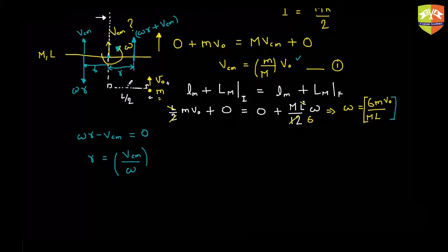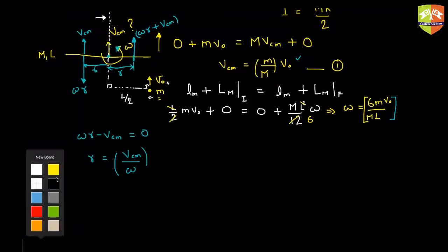Let us take up previous year questions which have actually appeared in JEE Mains exam. A disk of mass m and radius r is rolling with angular speed omega on a plane. The magnitude of angular momentum of the disk about the origin needs to be found. The formula to use is: angular momentum equals r cross mv_cm plus I_cm times omega.